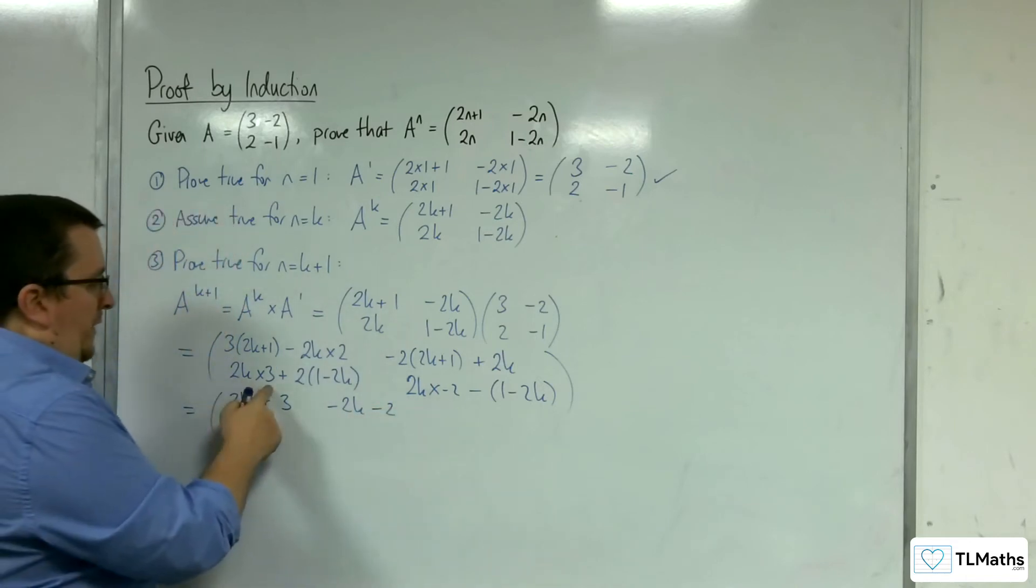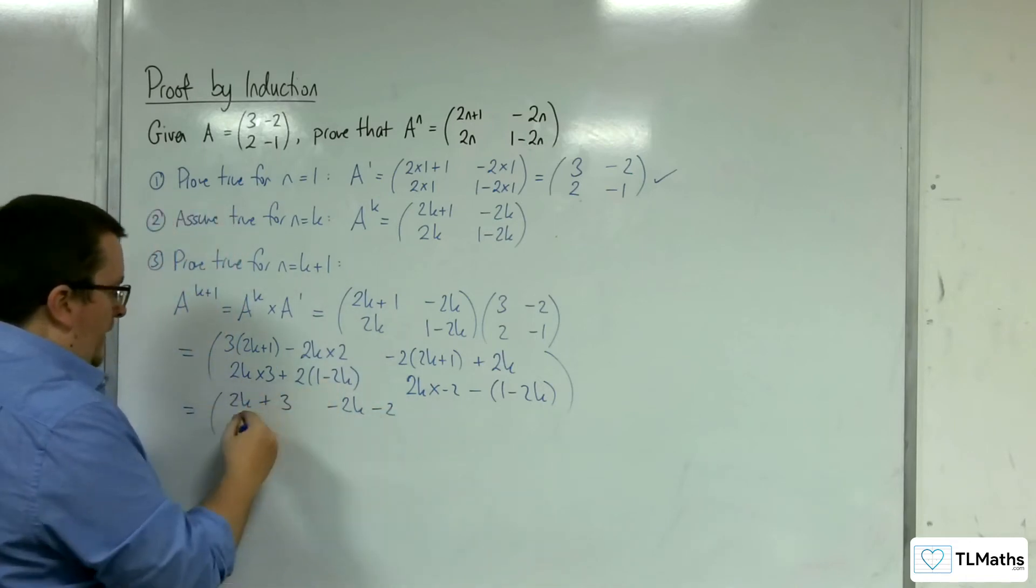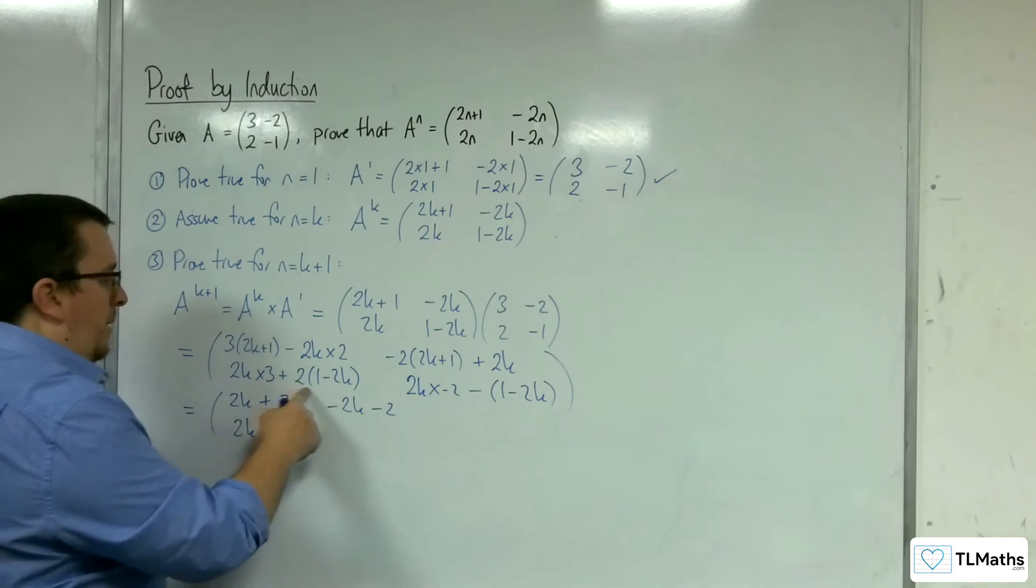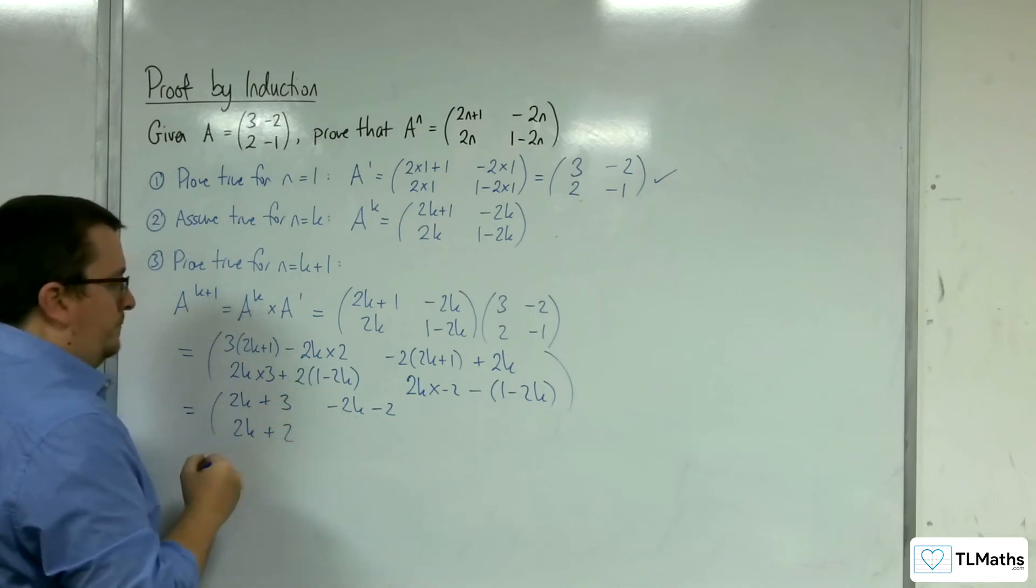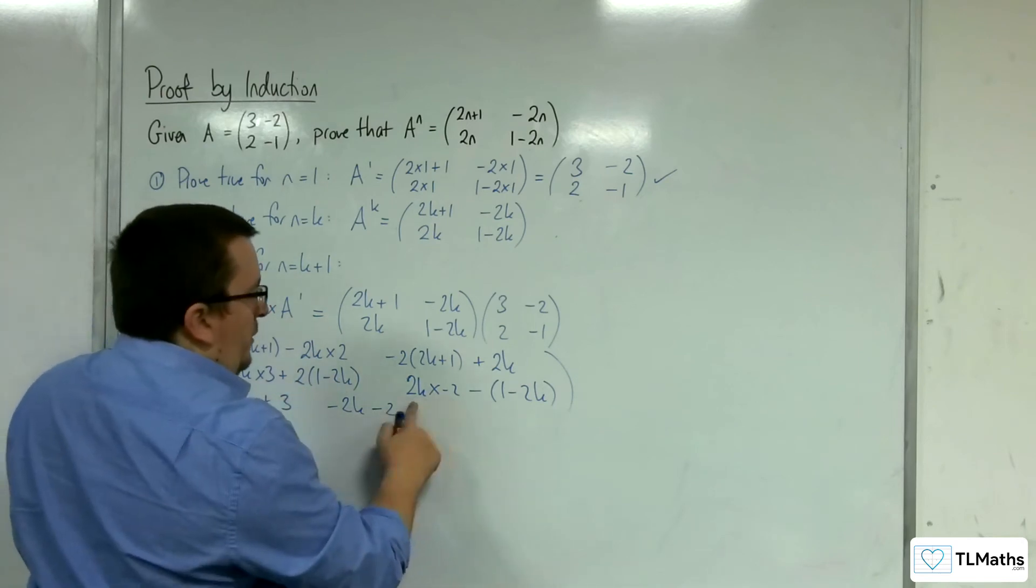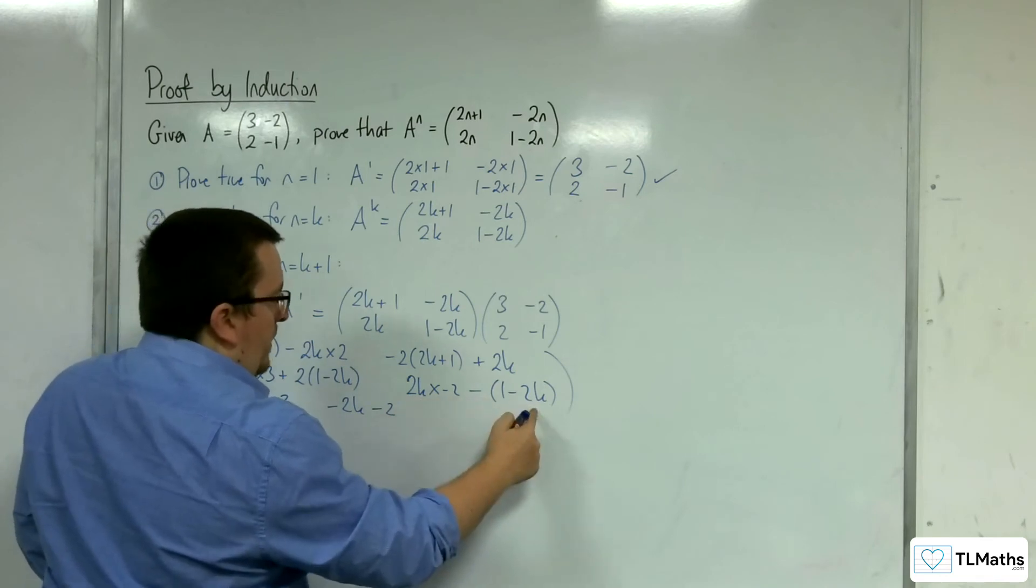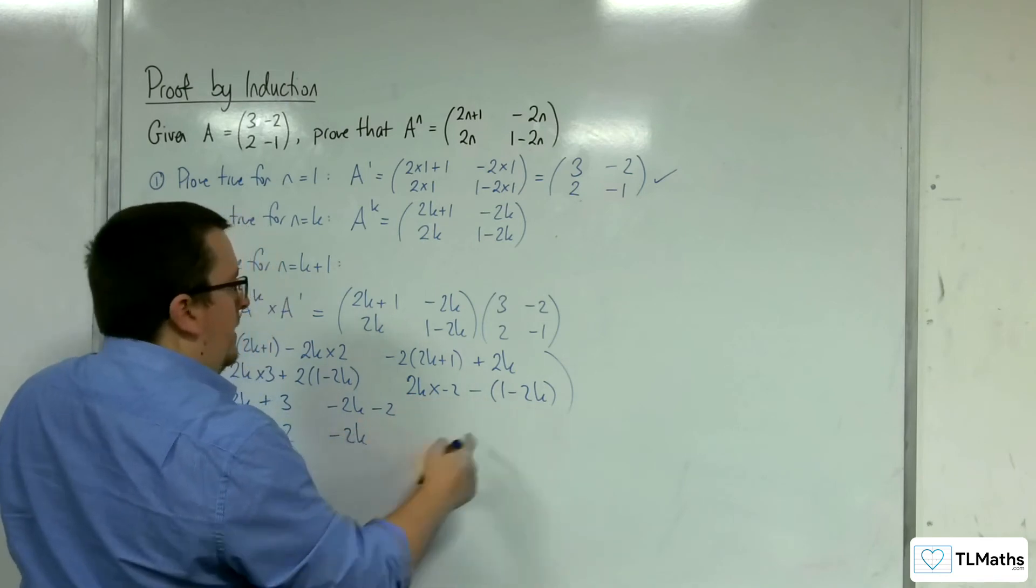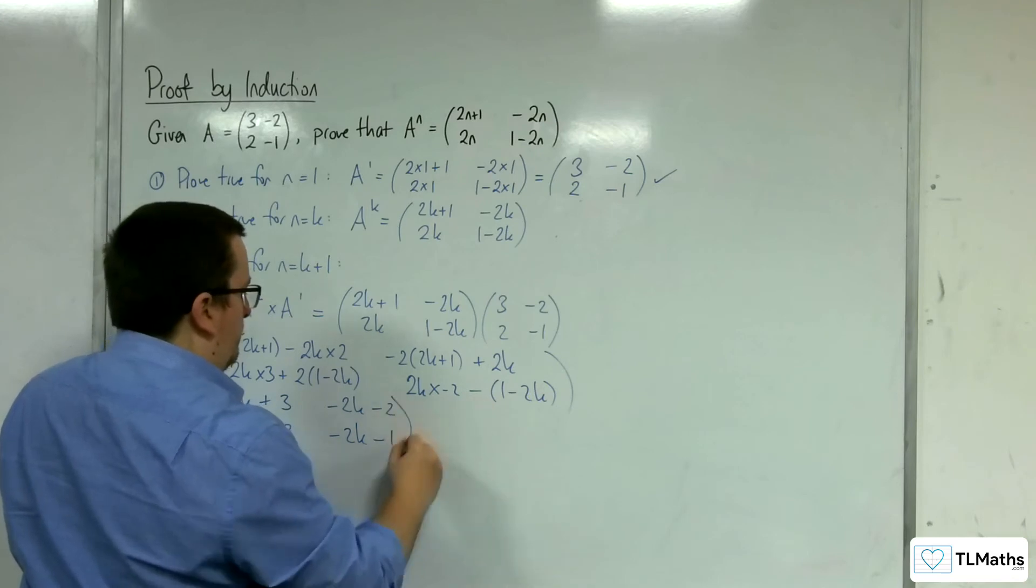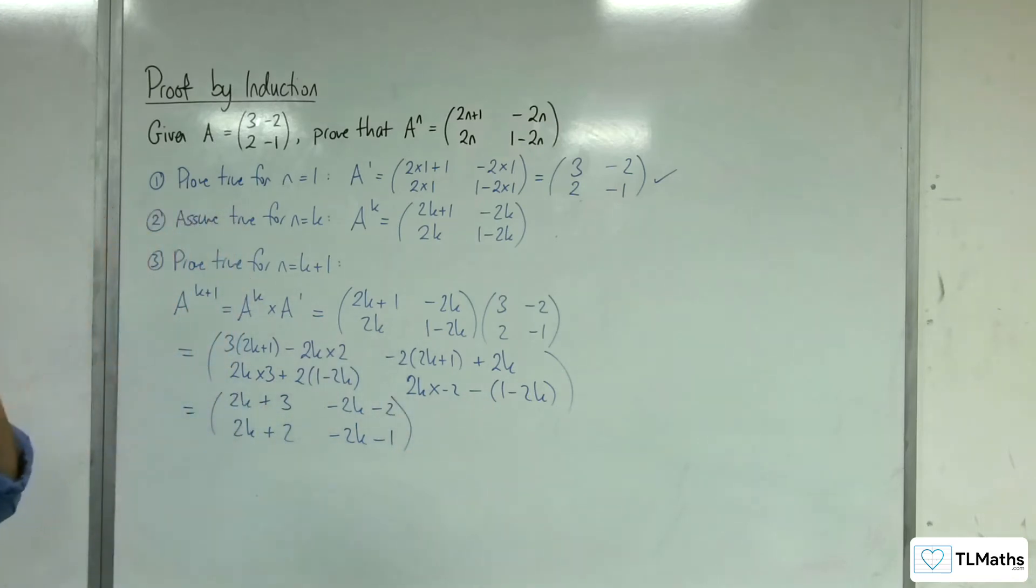We've got 6k take away 4k, so 2k+2k. And we've got -4k+2k, so -2k, and we've got take away 1.